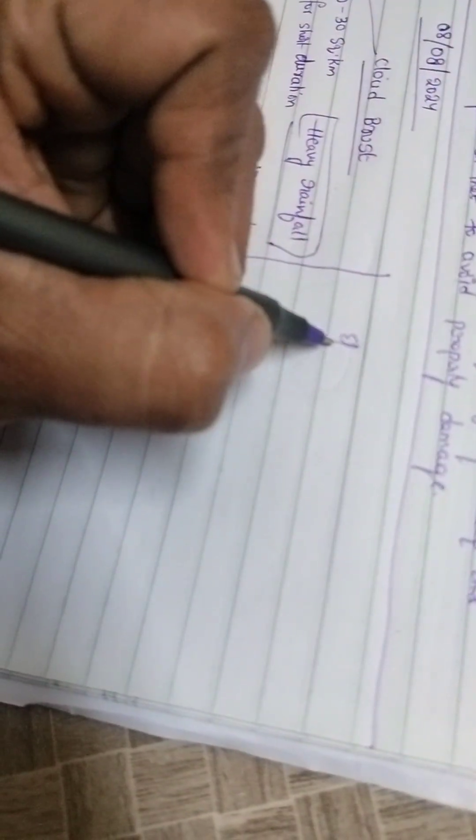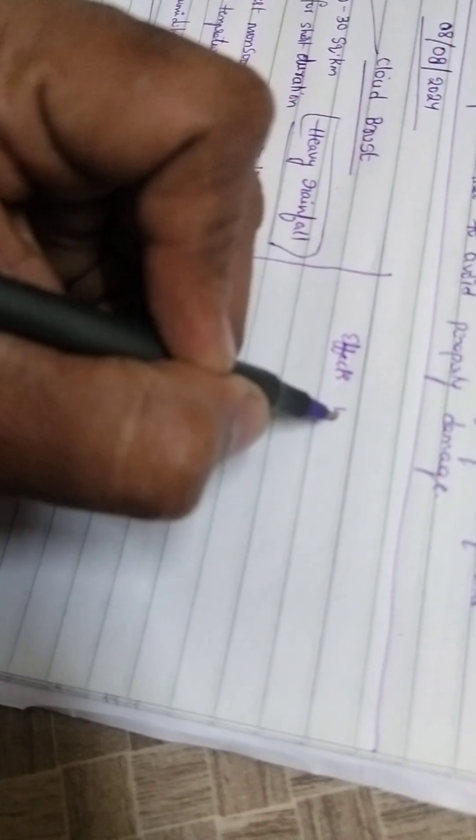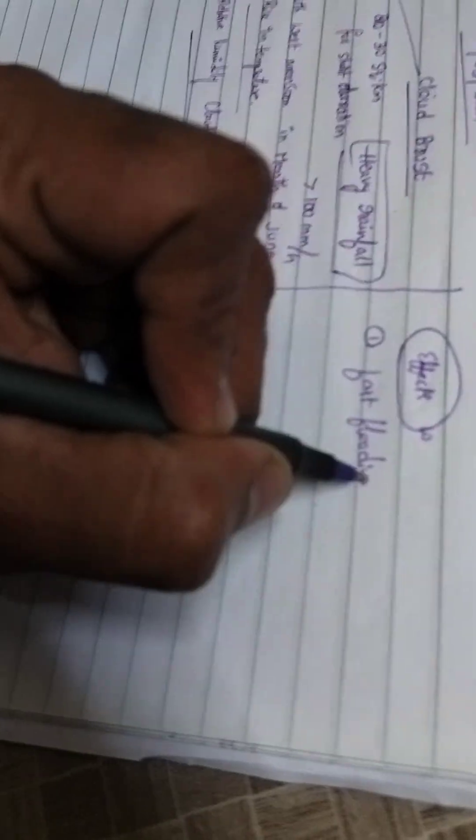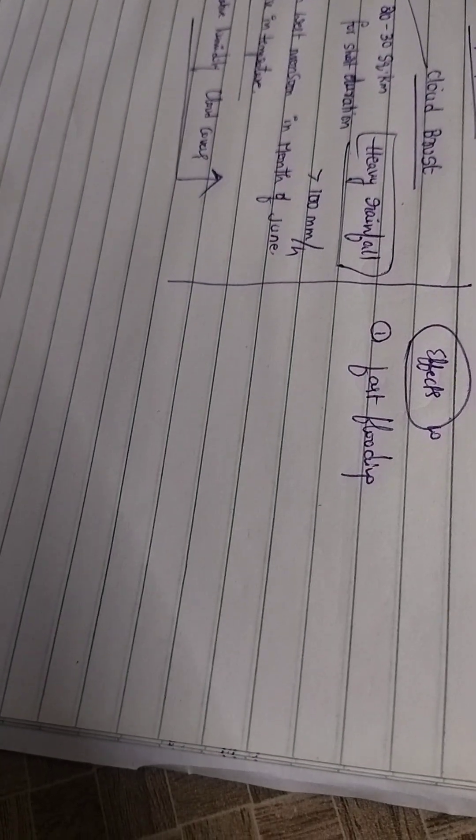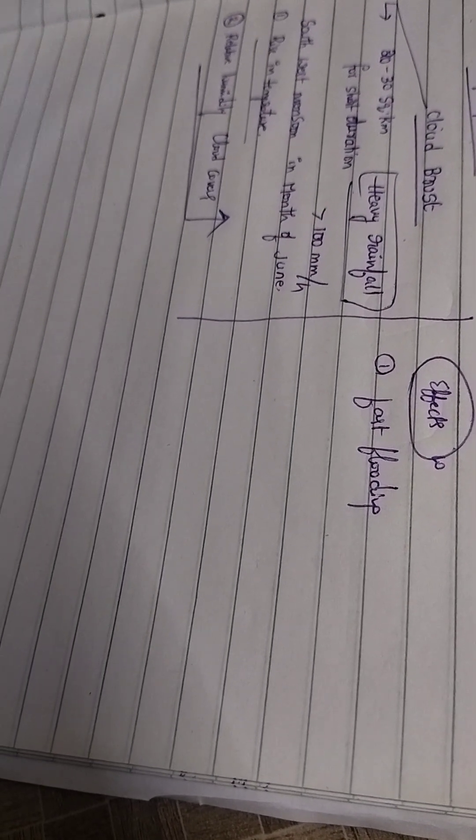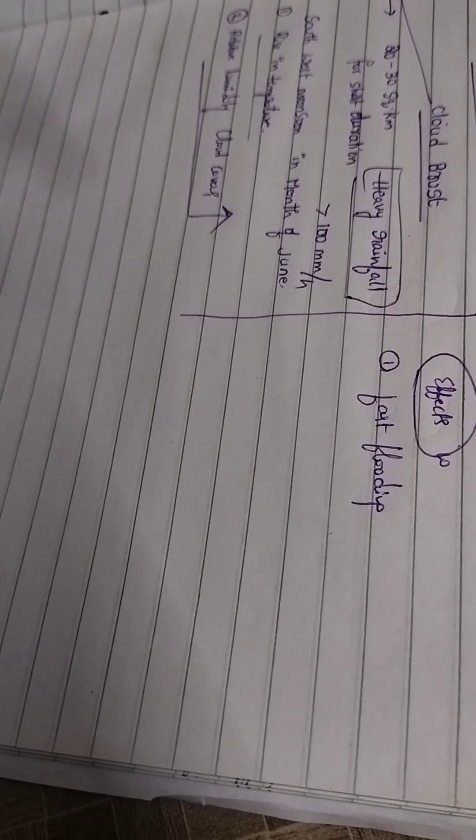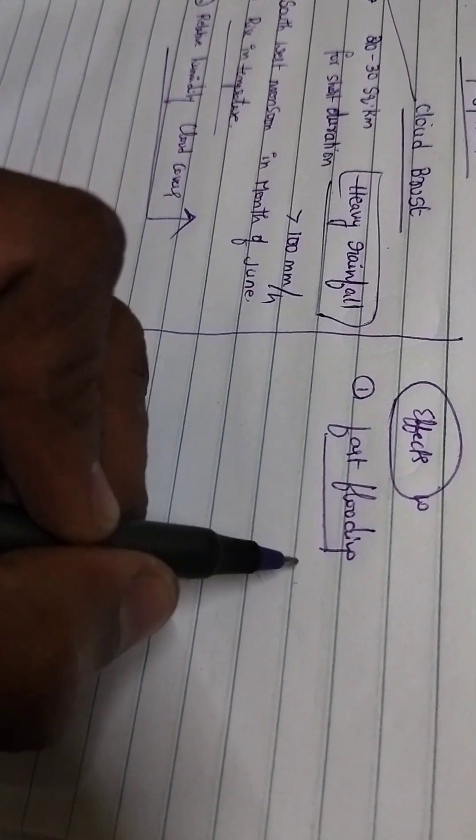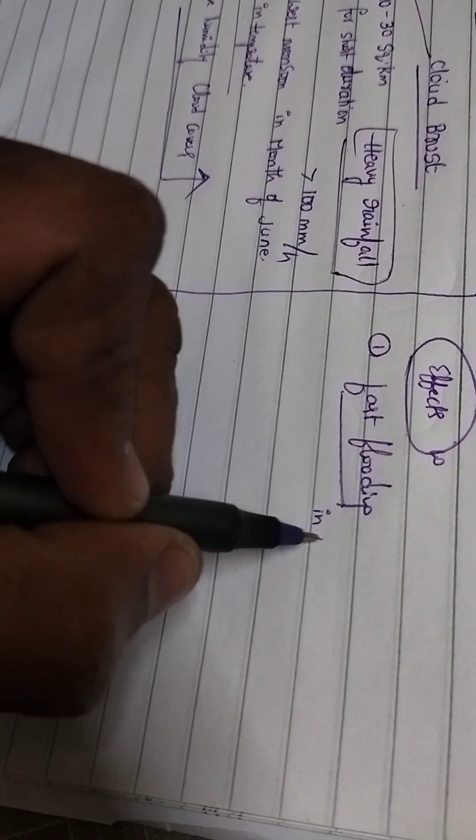Now we will see effects of this cloud burst. If cloud burst happens, what are the effects? First one is flash flooding. This heavy rainfall, even for one hour, 10 minutes or 15 minutes, is enough to get floods in nearby local areas. This flash flooding recently happened in Uttarakhand Chamoli district.